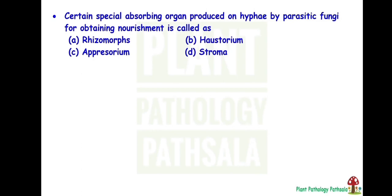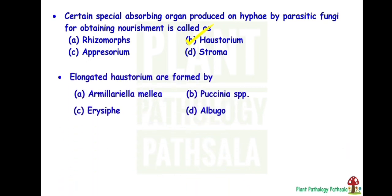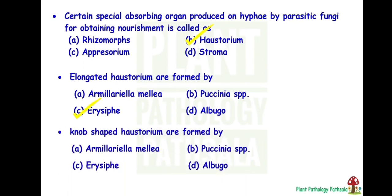Next: certain special absorbing organs produced on hyphae by parasitic fungi for obtaining nourishment are called as? Answer is B — Haustorium. Then, elongated haustoria are formed by? Answer is Erysiphe species — this is the powdery mildew fungus. Then, knob-shaped haustoria are formed by? Answer is Albugo species, which is the causal organism of white rust of crucifers, that is Albugo candida.